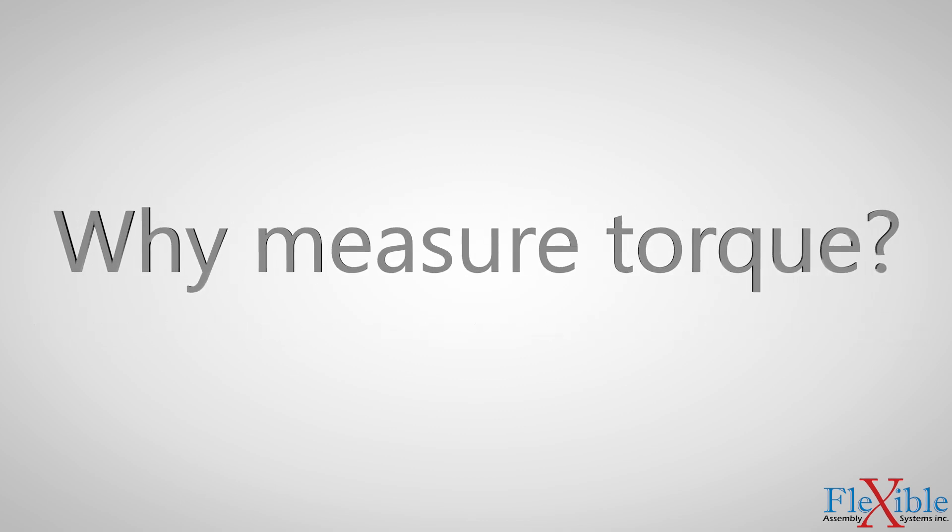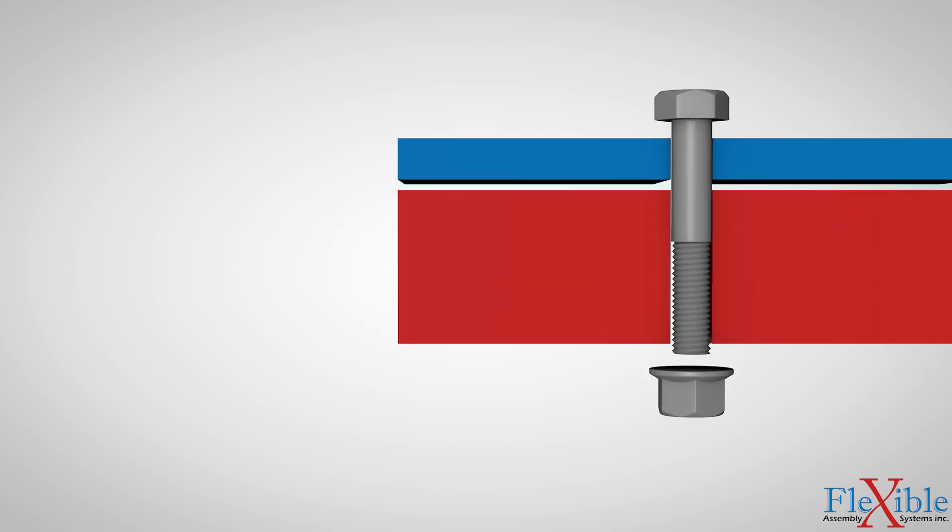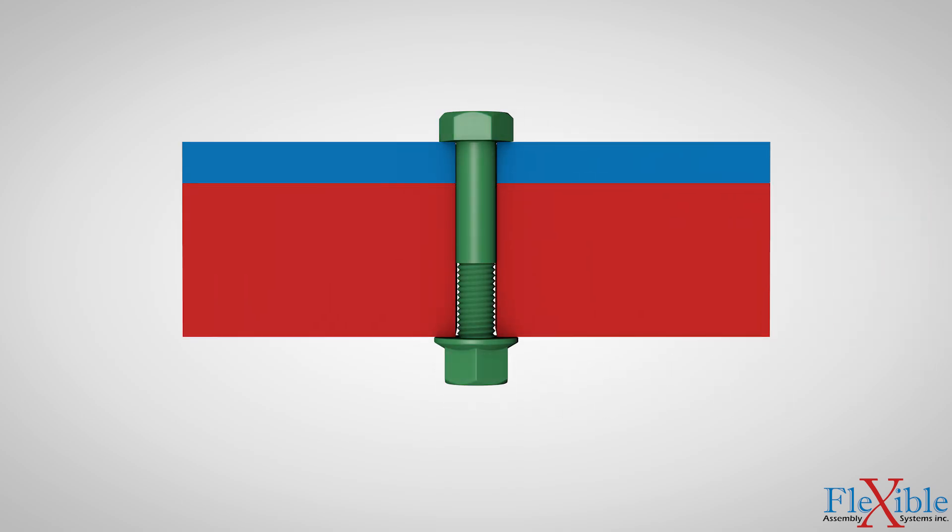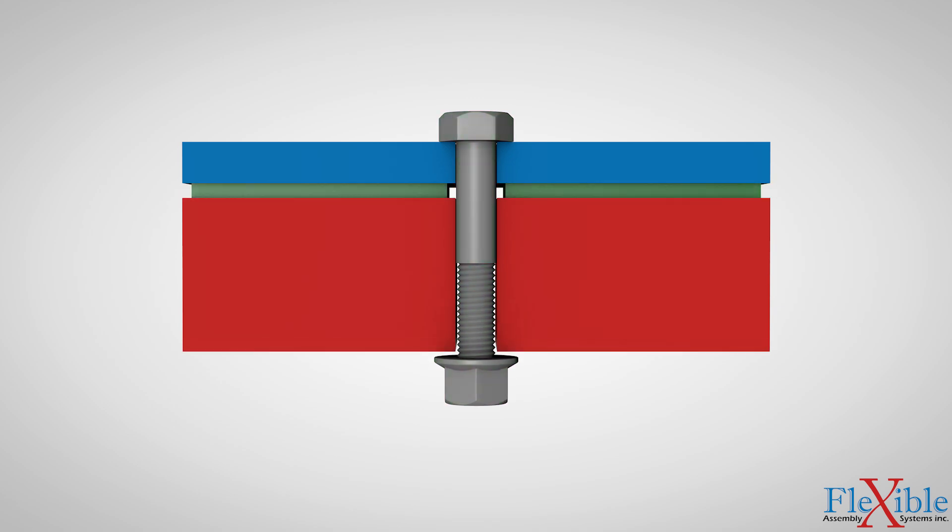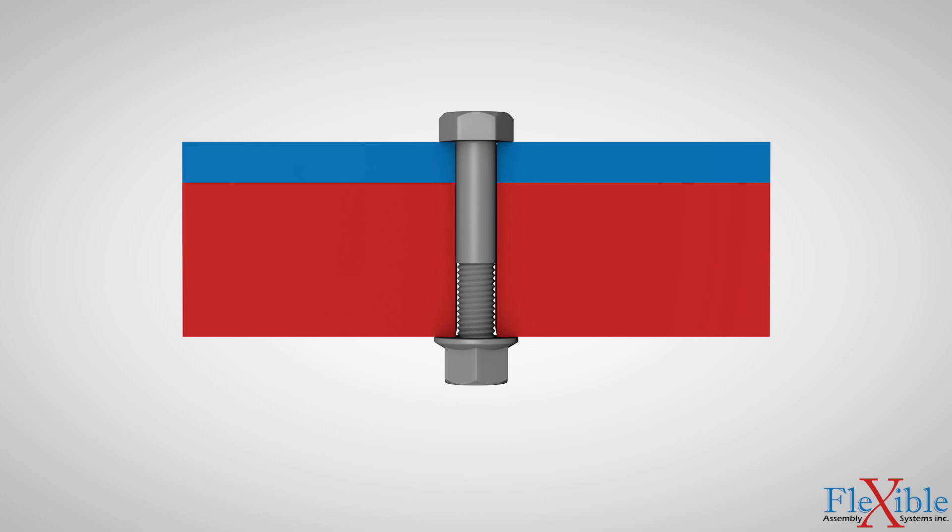But why measure torque at all when our goal with tightening is to achieve clamp force? Measuring torque is easy to implement and control since we measure it from the fastener that we are applying force to. To measure clamp force would require placing a scale between the mating surfaces which can't be done while tightening without having to later remove that scale during the final rundown. Measuring torque can be tricky however since you have to account for many forms of friction as we will discover in our next fastening theory video.